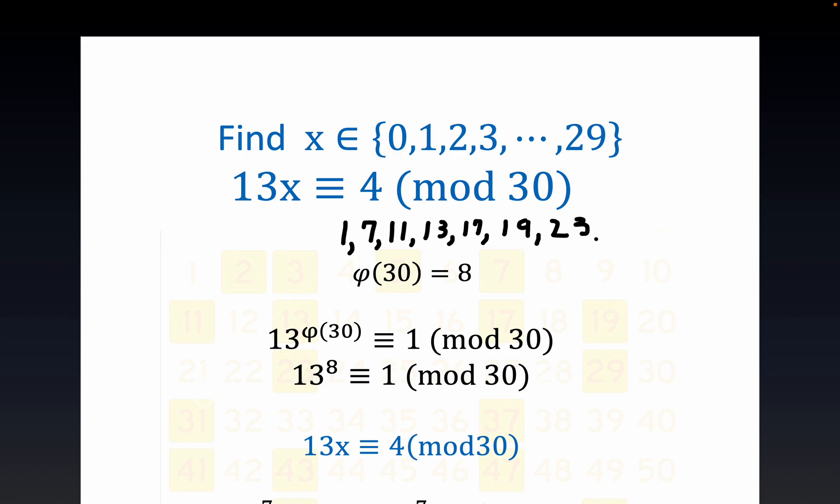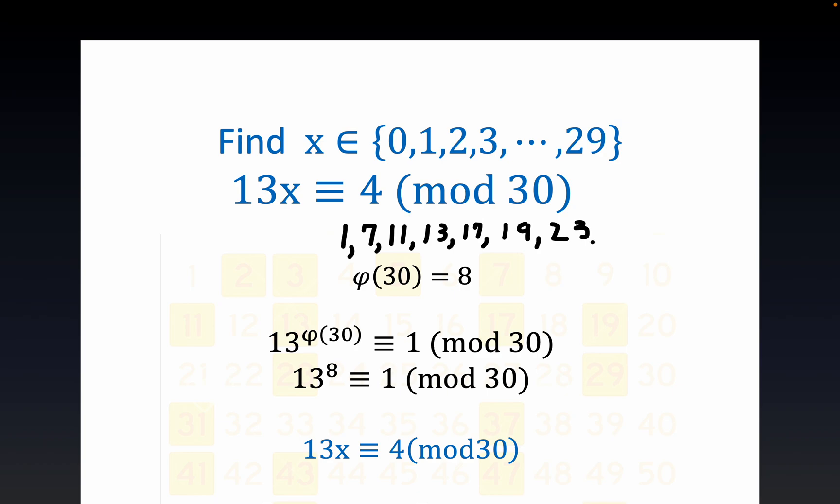Every one of those numbers were prime other than 1, which is not prime, but that's not always the case. This is a slightly misleading example, but notice how many numbers are in this list. Let's see, 1, 7, 11... there's 8 of them.